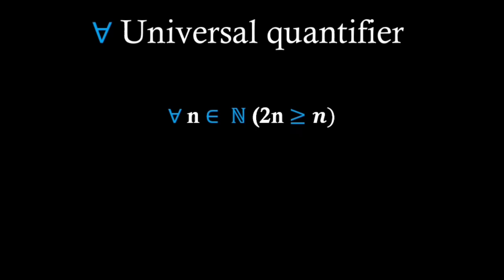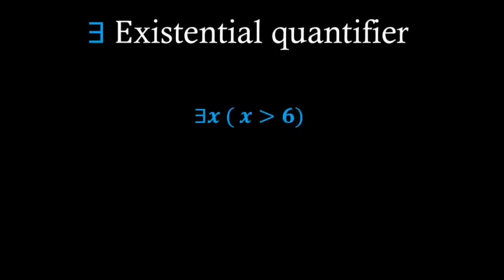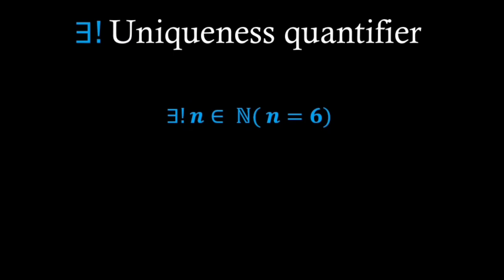Universal quantifier asserts that a statement is true for all elements in a given domain. The existential quantifier asserts that there exists at least one element in a given domain for which a particular statement holds true. Uniqueness quantifier is used to assert that there is exactly one element in a given domain for which a particular statement holds true.